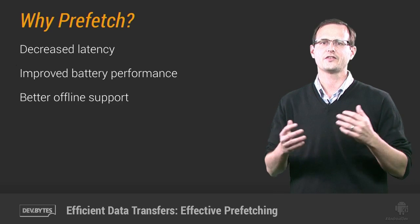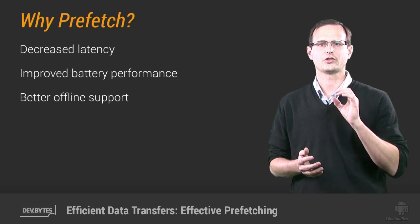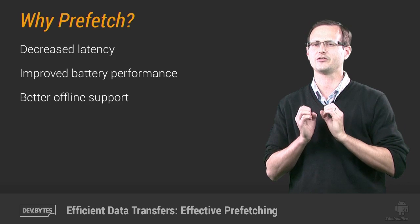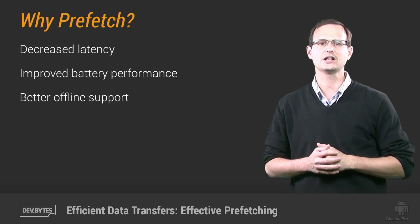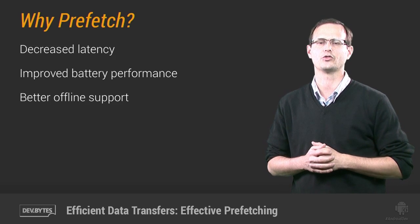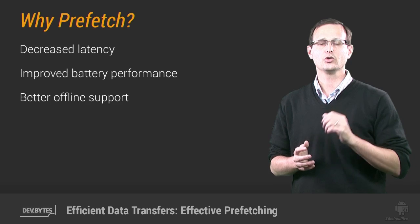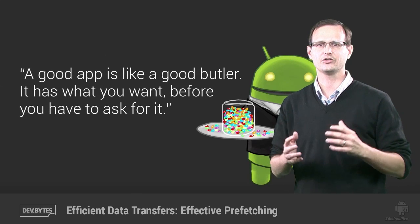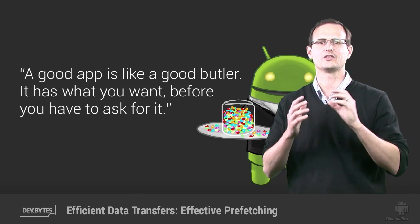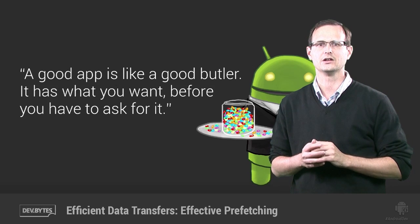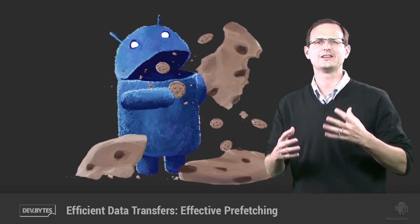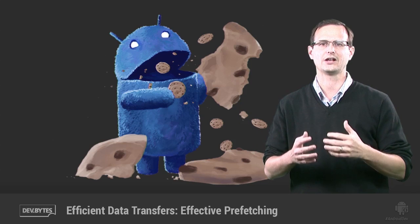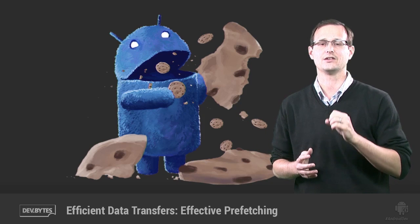By downloading all of the data that they're likely to need for the current session in a single burst over a single connection at full capacity, you can significantly reduce the number of radio activations. Your challenge is figuring out what you need to download ahead of time so that you can present the user with exactly what they need, when they need it, without simply downloading everything and wasting battery power and bandwidth downloading data that's never used.